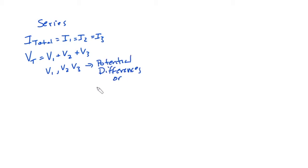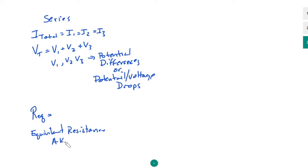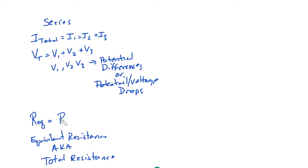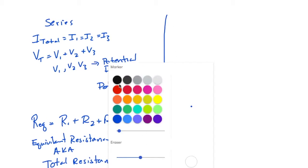Or potential drops, potential voltage drops, and that will be true for series and for parallel. And the last rule is we said REQ, or the equivalent resistance—this is really aka the total resistance—and in series that's going to be R1 plus R2 plus R3, etc., depending on how many there are.